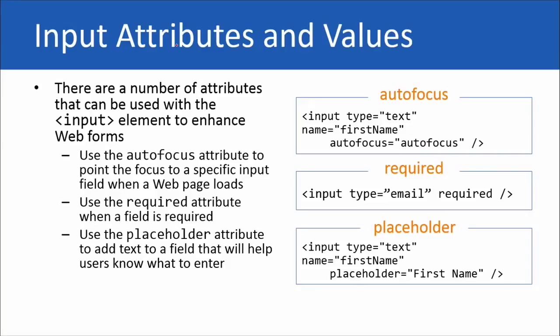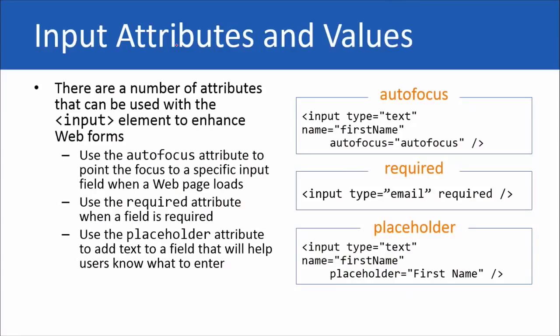All right. There are a couple of other different attributes that we want to be able to use with our input elements. We're going to use the autofocus attribute, the required attribute, and then the placeholder attribute. Autofocus is going to bring focus to a specific element. So if you have a form on a web page, it's going to highlight it. So if you have a box here, it's going to go ahead and it's going to highlight it in some kind of blue hue behind it in order to say, start with me, start with me. I want you to go ahead and enter information here. Required is going to...